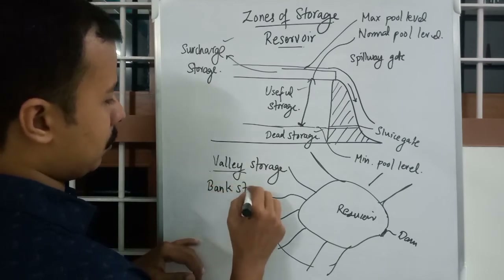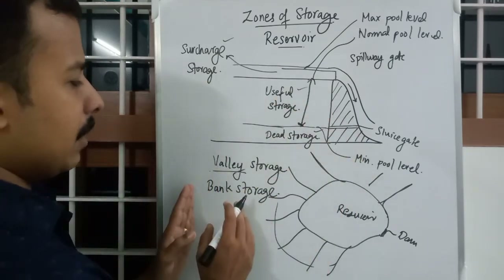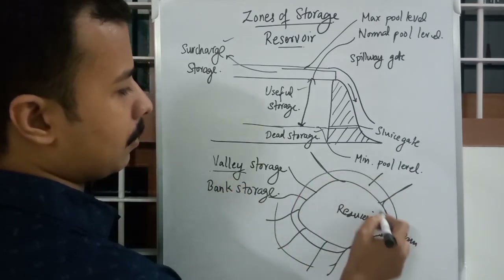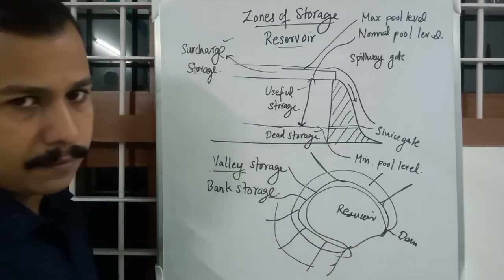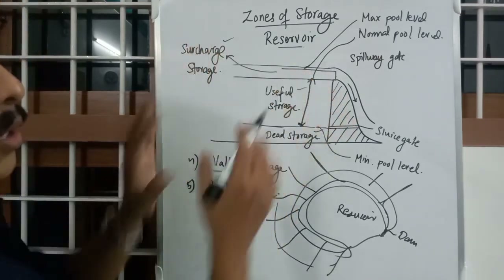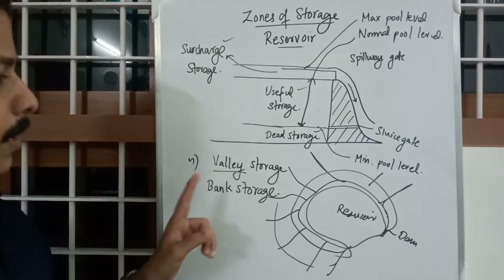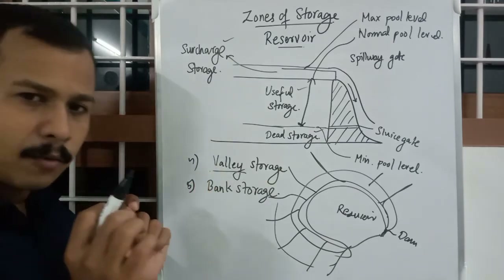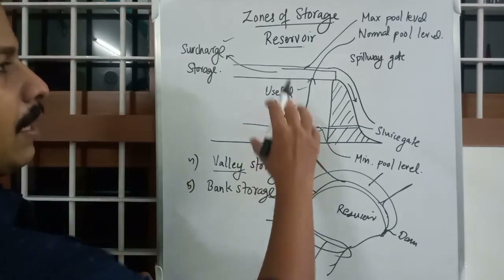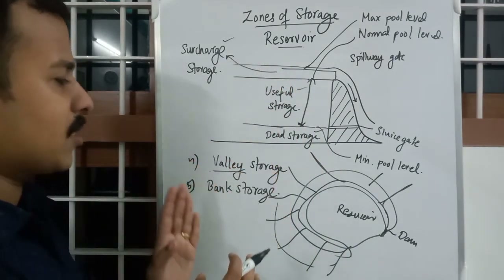The fifth zone is Bank Storage, which is similar to Valley Storage. Instead of the whole valley, Bank Storage is the water stored on the banks of the reservoir. These two — Valley Storage and Bank Storage — cannot be effectively shown on the cross-section of the reservoir, so they must be studied separately. Valley Storage and Bank Storage are only apparent when the reservoir is emptied.